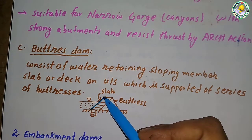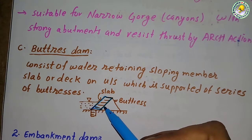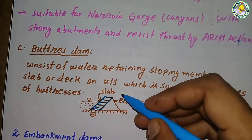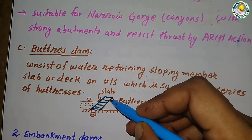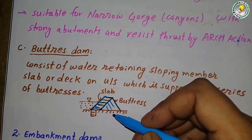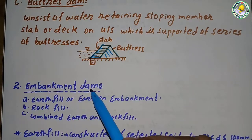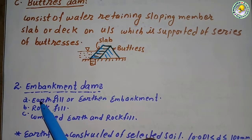As you can see in the diagram, the upstream is constructed with a slab or deck, and it is supported by a number of buttresses in series.